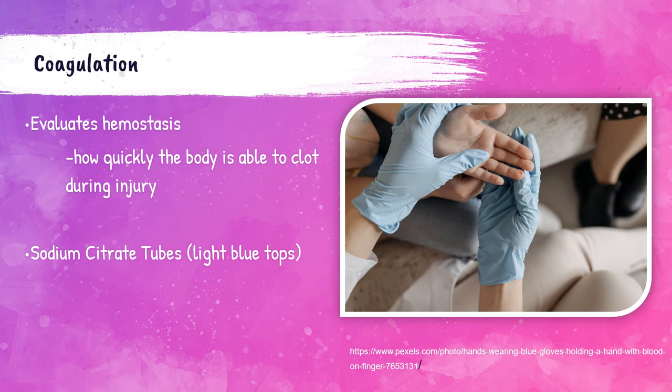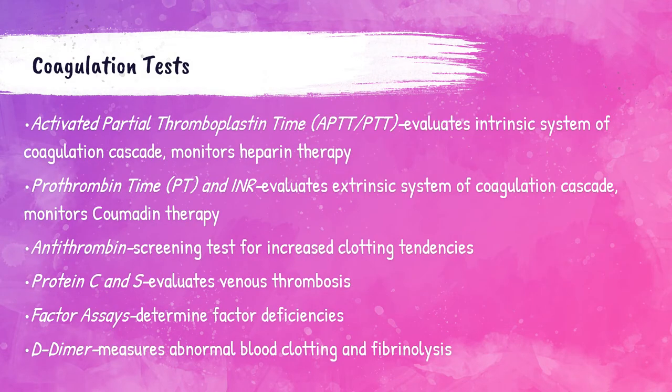The coagulation department tests samples to assess bleeding and clotting problems. Blood samples for coagulation tests must be collected in a light blue top tube, which contains sodium citrate. The two main tests performed are prothrombin time (PT) and activated partial thromboplastin time (APTT, also called PTT).